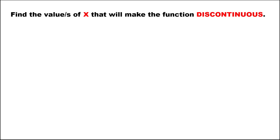To find the values of x that will make a function discontinuous, note that a function becomes discontinuous if the denominator is equal to 0, because then the function becomes undefined, or if we have the square root of a negative number, because the square root of a negative number is an imaginary number.